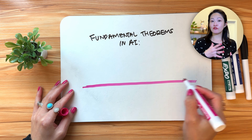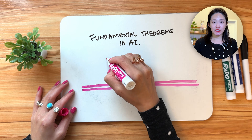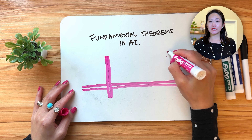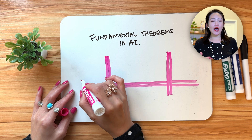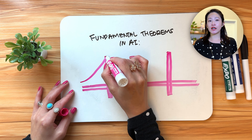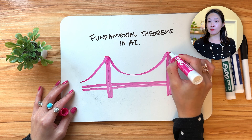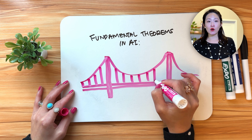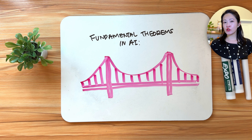Derivatives tell you how your money is changing at any given moment — are you winning or losing right now? Integrals add up all those changes to show you your total profit or losses for the night. In AI, fundamental theorems are like bridges. When you're optimizing a model, derivatives help the AI adjust step by step, while integrals smooth out those adjustments to ensure the AI improves over time. Together, they form the foundation for training AI systems.